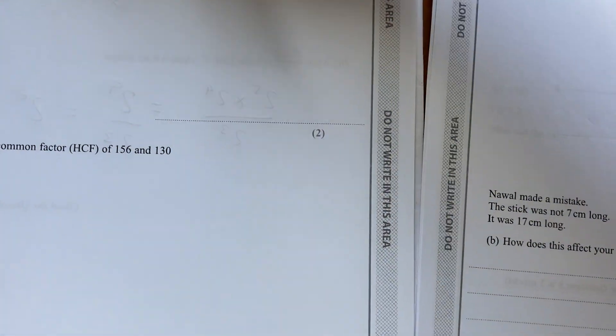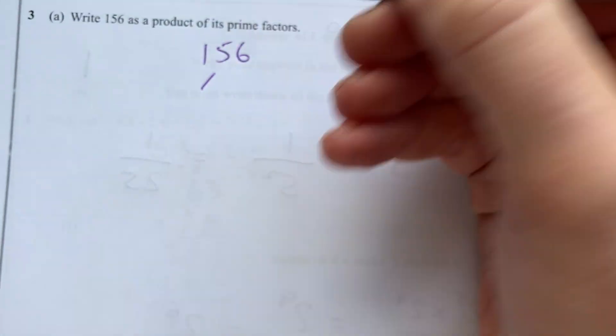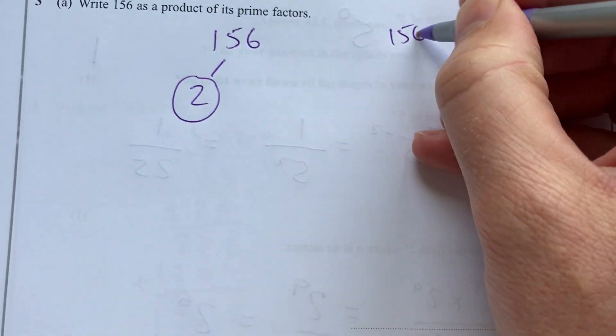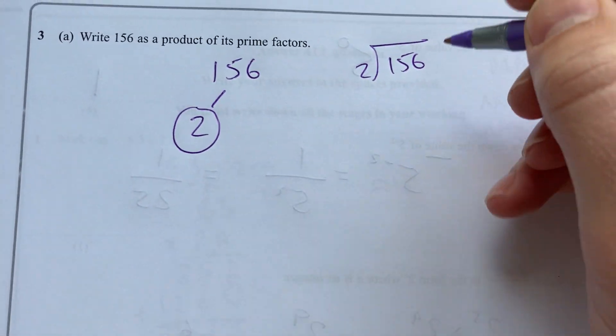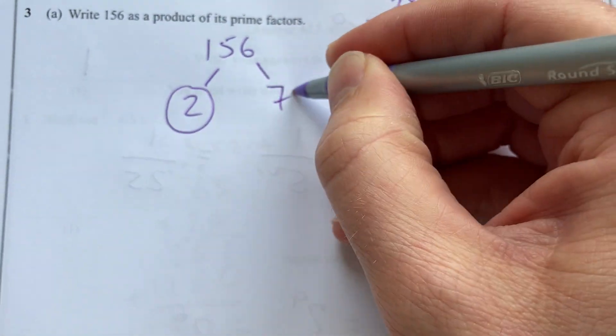Let's move on to question 3 now. Writing 156 as a product of its prime factors. I like to use the prime factor tree here. Divide by 2, it's even. So 156 divided by 2 is 78.